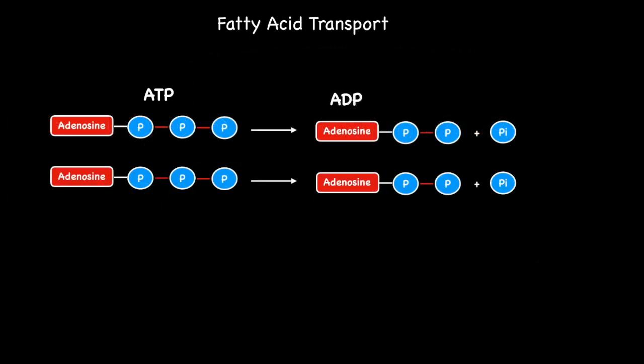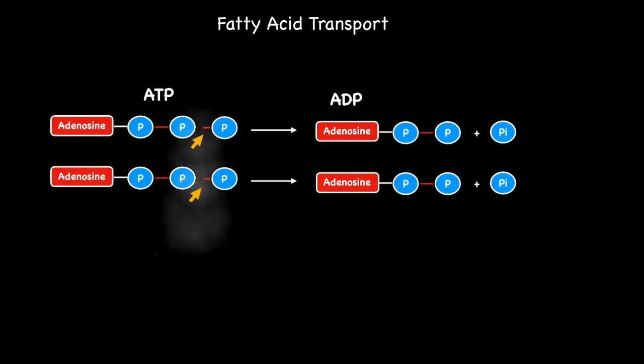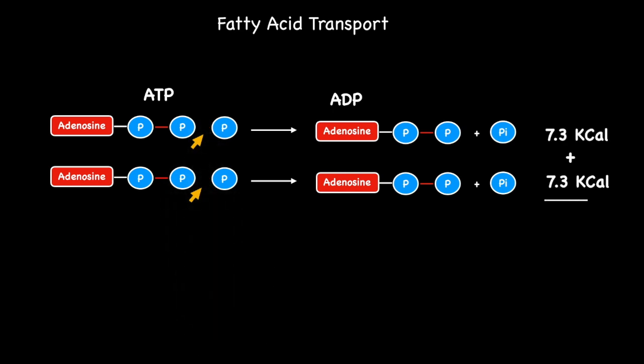Based on this, we could theoretically take two ATPs and hydrolyze the terminal phosphates from each molecule to yield two ADPs, and this would result in the same amount of energy as seen in the previous example. Once again, two high energy phosphate bonds have been hydrolyzed as indicated by the arrows in the illustration, but in this case from two separate ATP molecules.